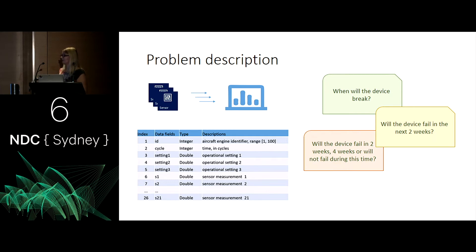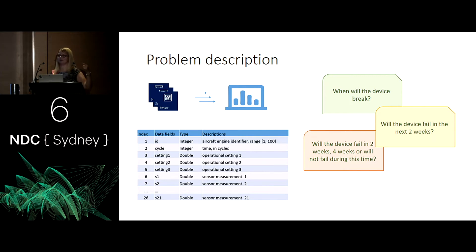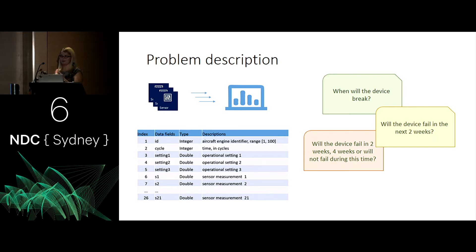In our example we have 21 sensor reads and three settings, which are the initial settings of the device. There's also something called a cycle — the engine is sending signals per cycle, and the cycle can be one day, one minute, one second, one millisecond. If you're planning to do something similar for any device, this is a very abstract way of putting a problem. You might have just five reads, all devices the same, so you don't even need those settings. But the cycle concept lets you adjust the system to your needs.